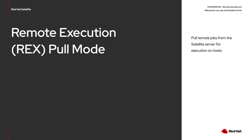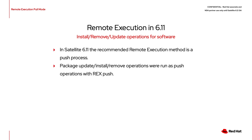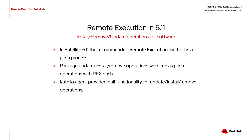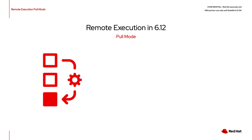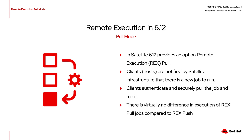Satellite now has the ability to run remote execution jobs through a new poll mode. In older versions of Satellite, such as 6.11, remote execution was a push process. If you were using Katello Agent, you could run remote execution through a poll process, but Katello Agent has been deprecated to modernize the host's registration process. In Satellite 6.12, you can now configure remote execution in a poll mode. This works through message-based notifications from the Satellite server to hosts that there is a remote execution job to be performed. The hosts will then securely pull the job payload from the capsule service and run the remote execution payload.